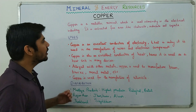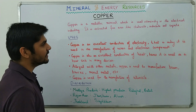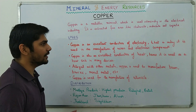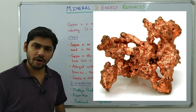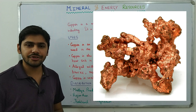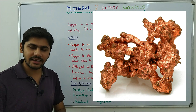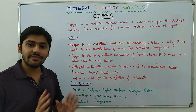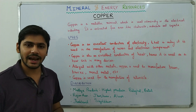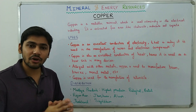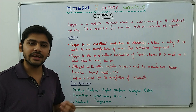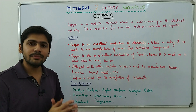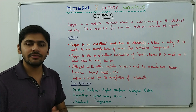Moving on to copper — a metallic mineral used extensively in the electrical industry, extracted from ores like chalcocite, malachite, and cuprite. Copper is a great conductor of electricity and heat. Because of these properties it is used in several industries to produce different types of goods and devices. Copper is also highly malleable and ductile, making it easy to work with.